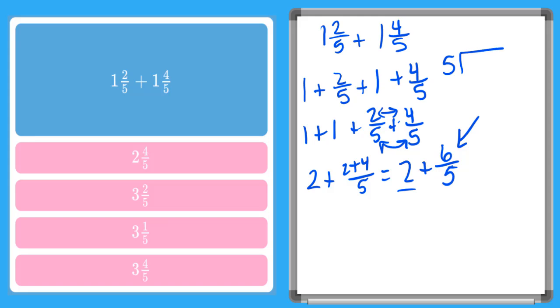So I say 5 goes into 6. How many times? 1 time. And 1 times 5 is 5. And I go ahead and subtract these. I get 1.